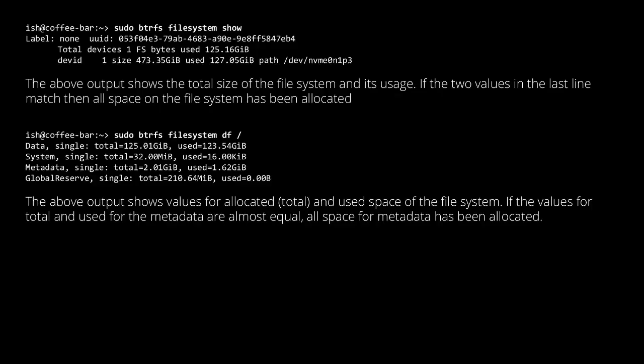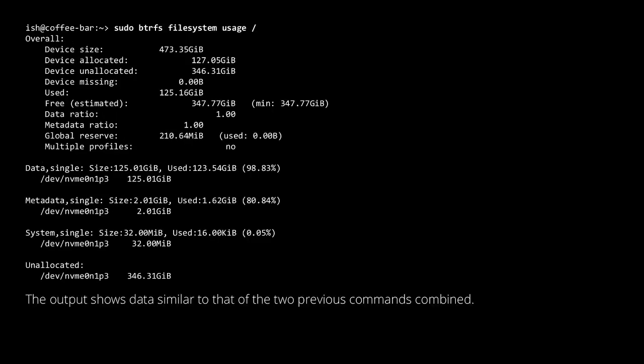To print file system information you can use 'btrfs filesystem show /' or 'btrfs filesystem df /'. Alternatively, you can use 'btrfs filesystem usage /' and the output is a combination of the two previous commands.